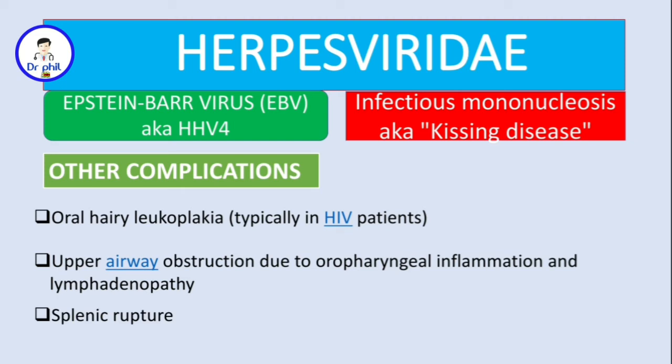Another serious complication is splenic rupture, because the spleen enlarges due to proliferation of T cells. If you are in a place with a lot of people and there is physical pressure, this can risk splenic rupture.